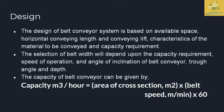The design of the belt conveyor is mainly based on the available space, conveying length, conveying lift, and characteristics of the material to be conveyed. The capacity required is also a major factor before designing the conveyor belt. Selection of the belt also depends on capacity, speed of operation, angle of inclination, trough angle, and depth.